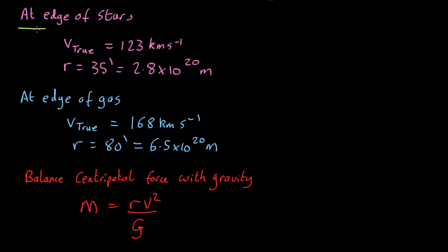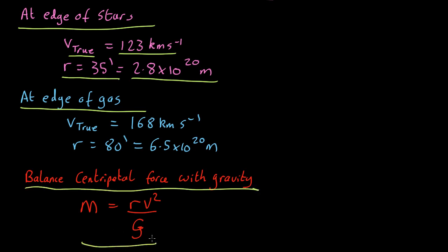So we know at the edge of the stars, the true deprojective velocity, and we are able to convert the angle distance of that into a true physical distance. And we also know the same things at the edge of the gas. And finally, we know the equation for balancing centripetal forces of gravity is this. So all we have to do is plug these numbers into this equation.